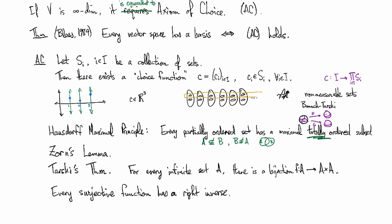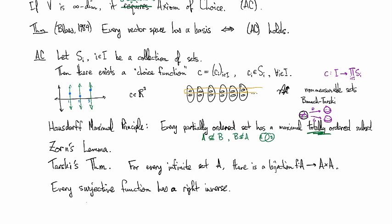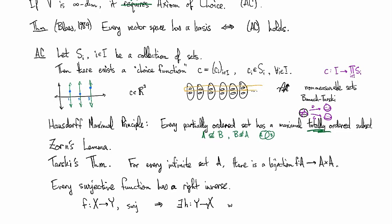That means just that if f is a function from X to Y and it's surjective, then there exists some h from Y to X such that the composition f of h is the identity function on Y. So that's what a right inverse is. A left inverse means you compose it on the left side of f instead, but this is a right inverse.